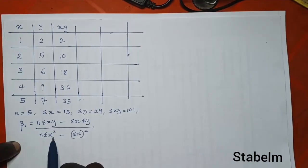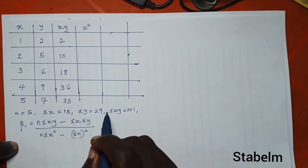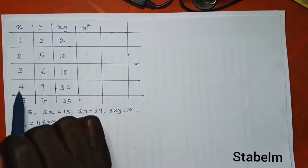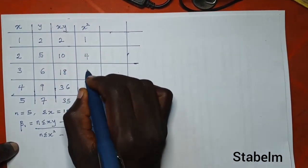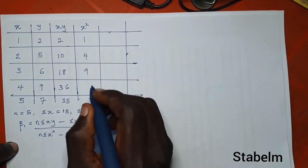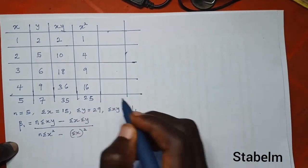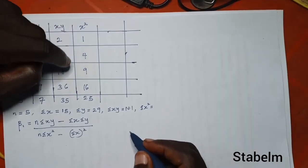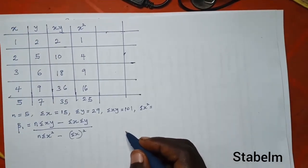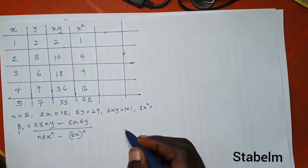We also need x squared: squaring each value gives 1, 4, 9, 16, 25. Adding them all up — 1 plus 4 plus 9 plus 16 plus 25 — gives summation x squared equals 55.